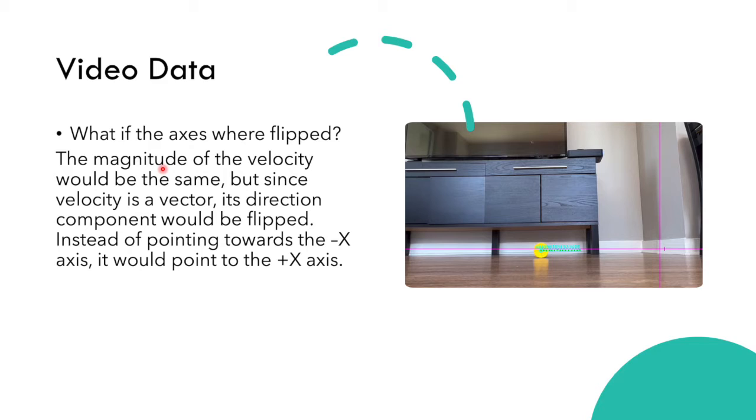When analyzing our video data, we can see what happens if the axes are flipped. As we know, velocity is a vector so it has two components: a magnitude and a direction. The magnitude if the axes were flipped would not change since it's the same velocity. So the only aspect of it that would have changed is the direction. Instead of going in the minus x direction it would go in the positive x direction, so instead of being a negative velocity it would be a positive velocity.